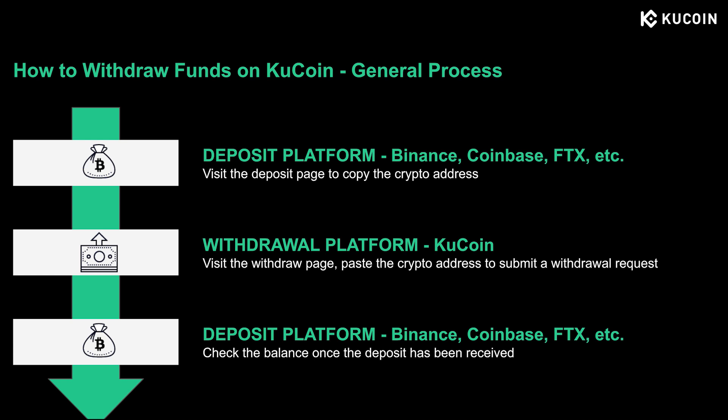If you want to move your funds from CoolCoin to another platform, you'll need to make a withdrawal. There are three steps: first, visit the deposit page on the exchange platform you want to send the funds to and copy the crypto address. Then come back to the CoolCoin website, go to the withdrawal page, paste the crypto address you copied from the other exchange, and submit a withdrawal request. You can then check your balance on the other exchange once the deposit is completed.